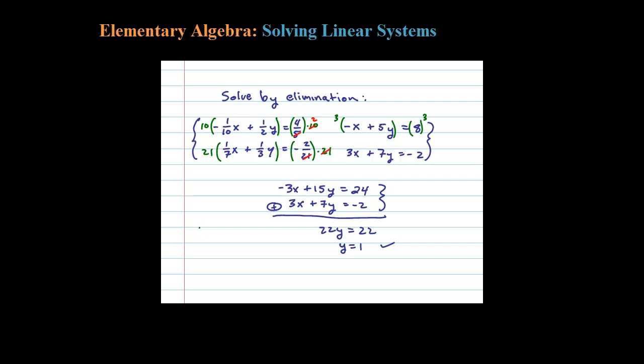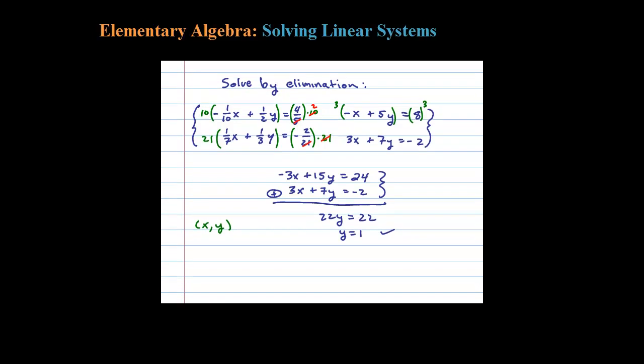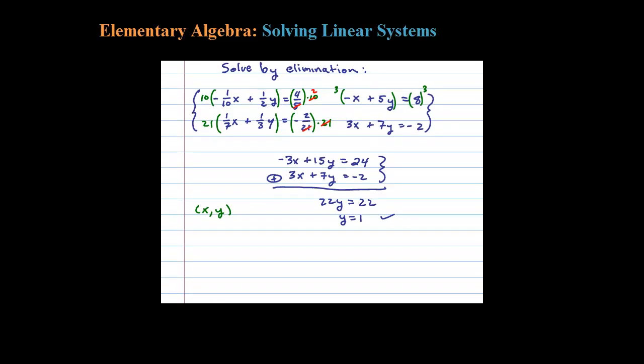Now answers here are always going to look like ordered pairs, that's the point where the two lines cross. We just found y, now it's up to us to back substitute and find out what x is. You can back substitute into any one of the equations from above. Let's try this one, looks like it should be easy to back substitute into: 3x plus 7 times y equals negative 2.